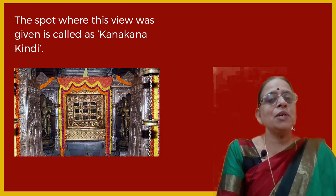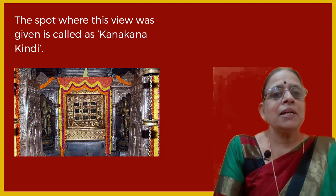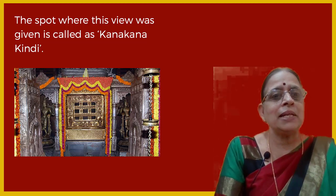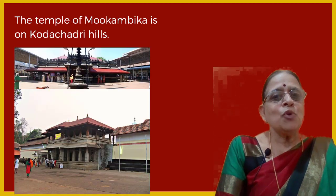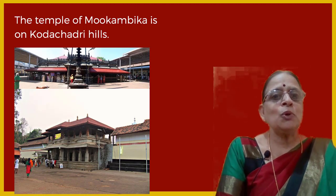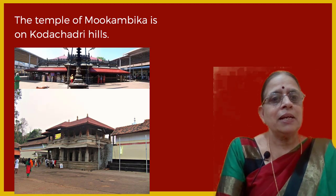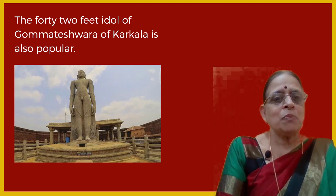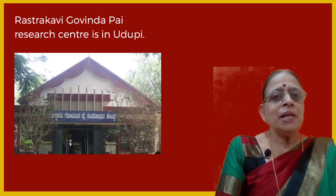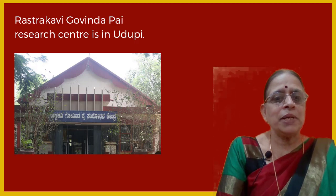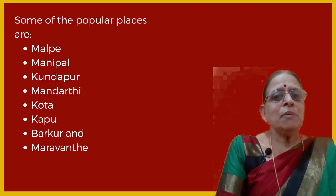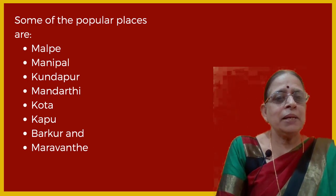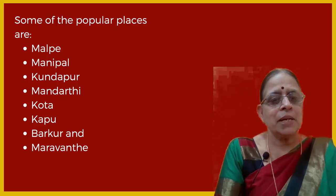If you visit Udupi, even today you can take the darshan of Lord Krishna through Kanakana Kindi only. The temple of Mukambika is on Kodachadri hill at Kolluru — it is very famous and an important religious center. The 42-feet idol of Gomateshwara at Karkala is also a popular monument. Rastrakavi Govindapai Research Center is in Udupi. Some popular places of Udupi are Malpe, Manipal, Kundapur, Mandarthi, Kota, Kapu, Barkur and Maravante.